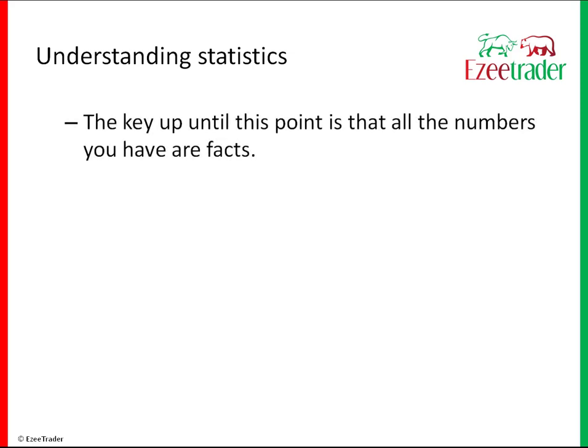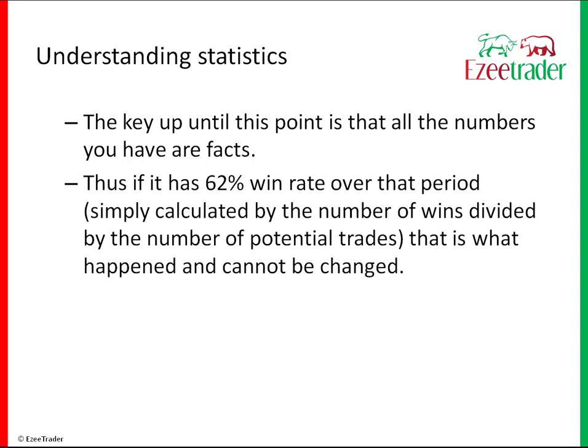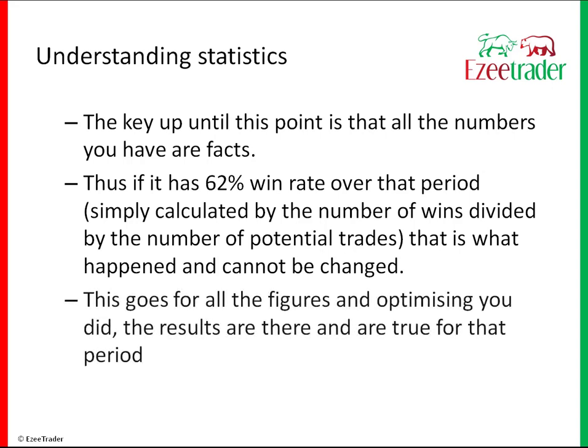Up to the point of today, what's happened in the past is fact — that's where price went, that is pure fact. If you've got a 62% win rate over that period, simply calculated by number of wins divided by number of potential trades, that is what happened and it cannot be changed. You can't go back and change it unless you change the strategy. So if you stick with your strategy and it had a 62% win rate, it's done. The results are there and true for that period.